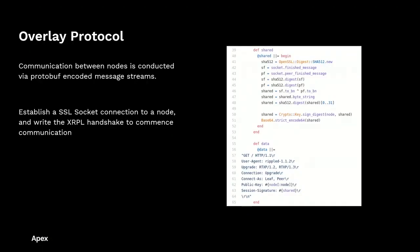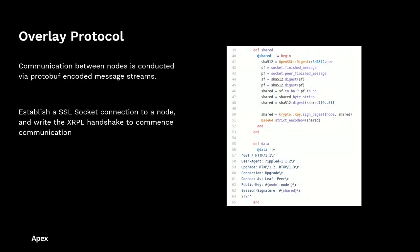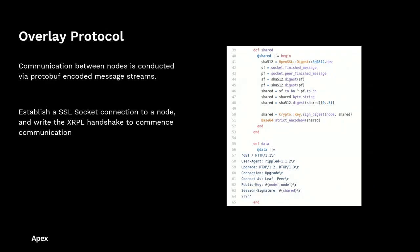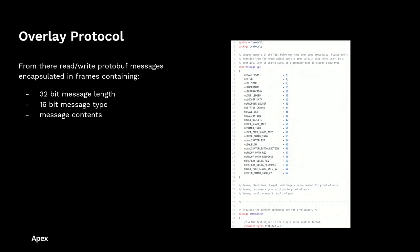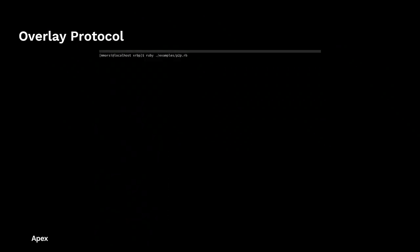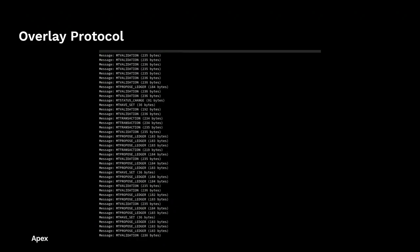The overlay protocol is responsible for communication between nodes in the system. It transpires via a protobuf-encoded message stream through which an SSL connection is established, a handshake occurs, and then communication happens. On the right you see an example from our Ruby library, XRBP — the Ruby interface to the ledger — at the top showing the SSL connection being established and at the bottom showing the actual handshake. The protobuf messages consist of a 32-bit message length, a 16-bit message type, and then the actual message contents. Here's an example from our Ruby library where the connection is being established, the handshake is occurring, and we're dumping messages out to the console.